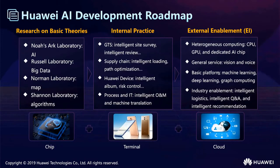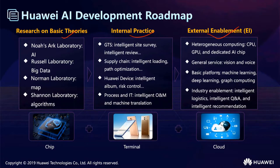Let's see Huawei AI's development process. Its main list consists of three steps: research on basic theories, internal practice, and internal enablement. Huawei has four labs to do the research on basic theories. The lab for big data, the Norman Lab for math, and the Salon Lab for algorithms.